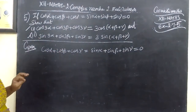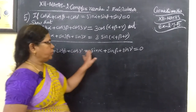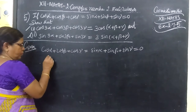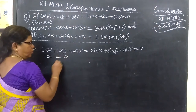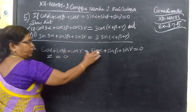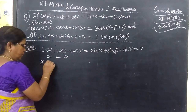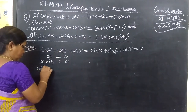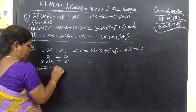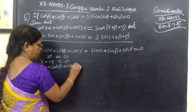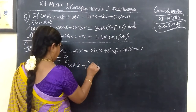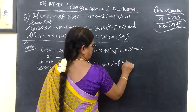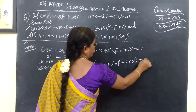Given this equals 0, for some complex number z = 0. So this is the real part, this is the imaginary part. So sum x + iy = 0, where x is cos α + cos β + cos γ, and iy is i times sin α + sin β + sin γ = 0.